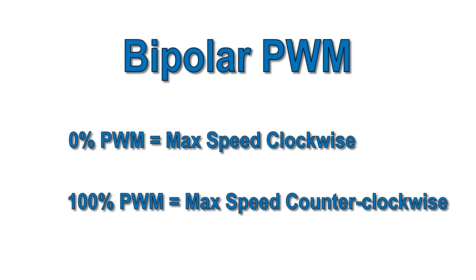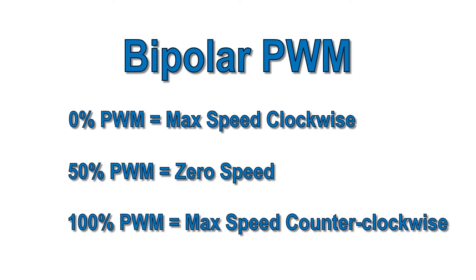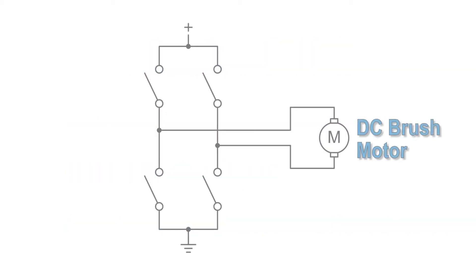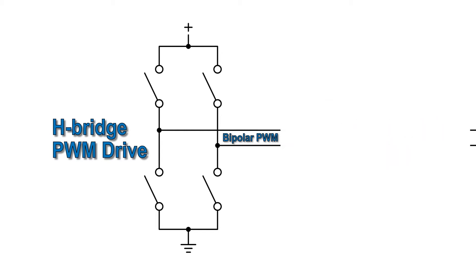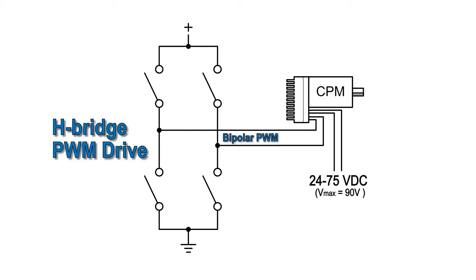Finally, ClearPath has a Bipolar PWM mode, where 0% PWM and 100% PWM correspond to max speed in opposite directions, and 50% means zero speed. This mode is perfect for those of you who want to replace brush motors powered by H-Bridge PWM drives without having to change any software, because H-Bridge drives naturally output bipolar PWM. You just hook the drive output to ClearPath's PWM input, and you're done.